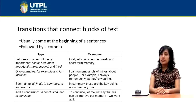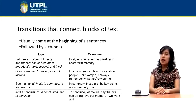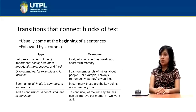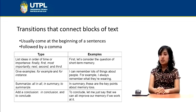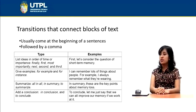To give examples, we have 'for example' and 'for instance.' For example: 'I can remember lots of things about people. For example, I always remember what they are wearing.' To summarize, we have: 'all in all,' 'in summary,' and 'to summarize.' For example: 'In summary, these are the key points about memory loss.'